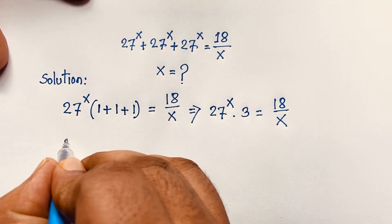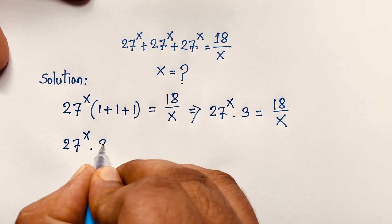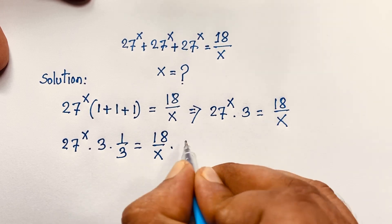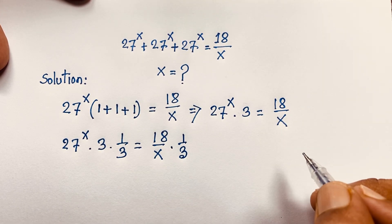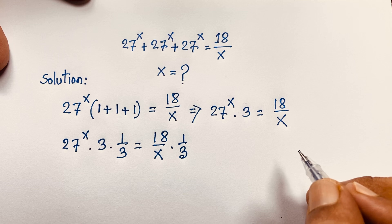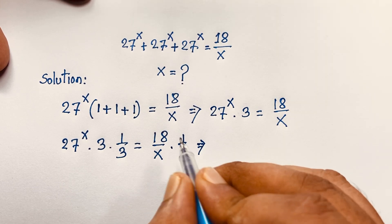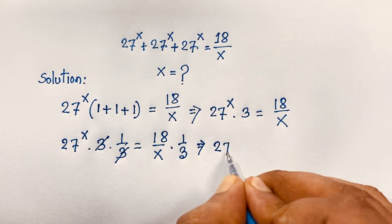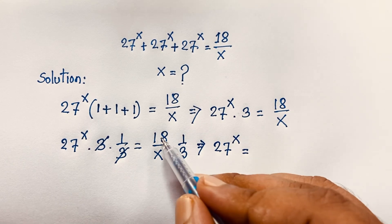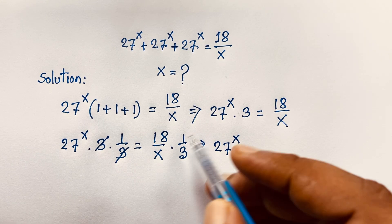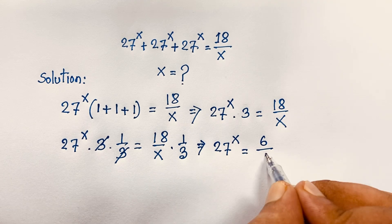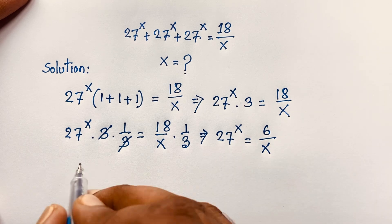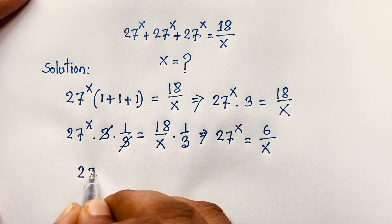Now we have 27^x times 3 = 18/x. I multiply both sides by 1/3. The 3 cancels out, giving us 27^x = 18/3 over x, which simplifies to 27^x = 6/x.